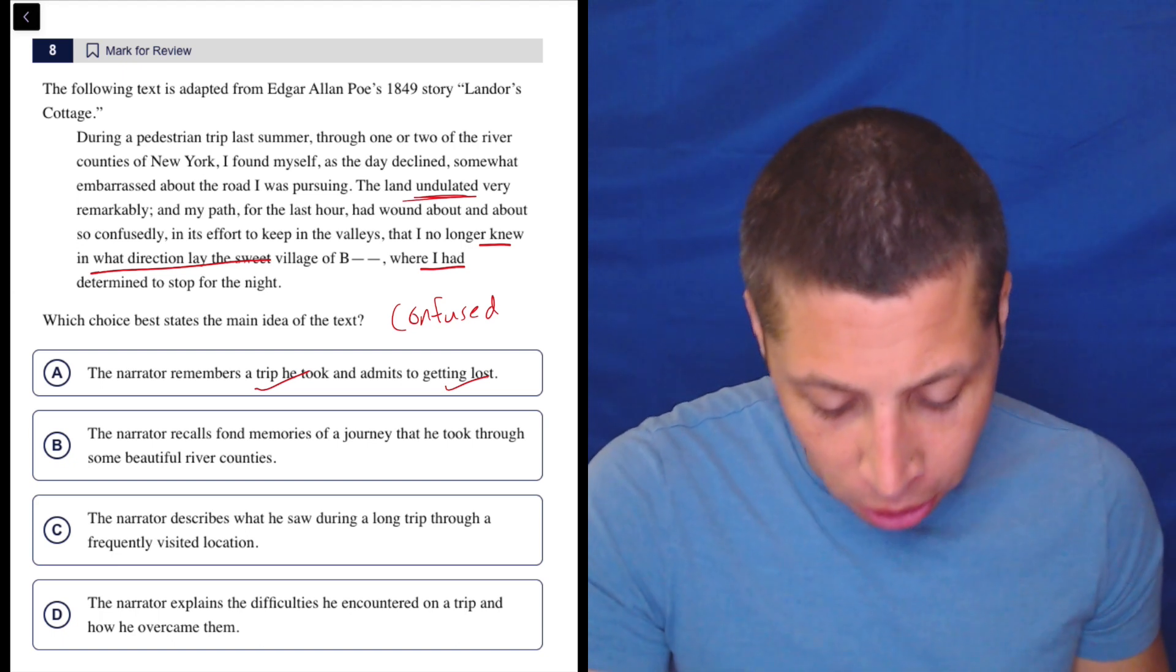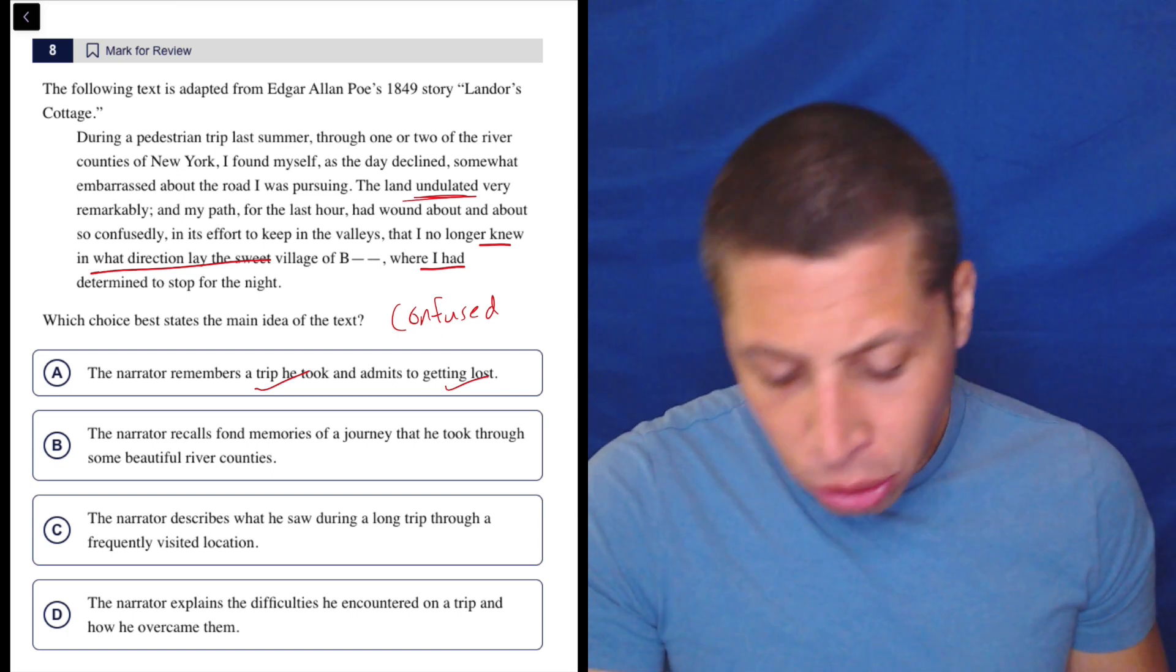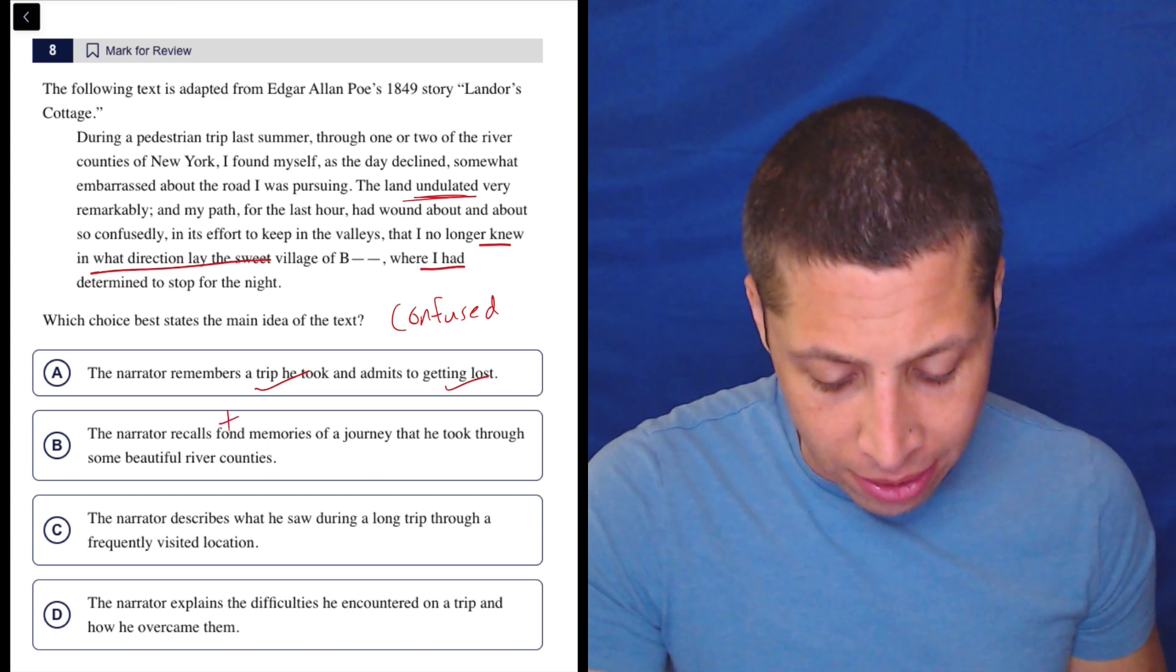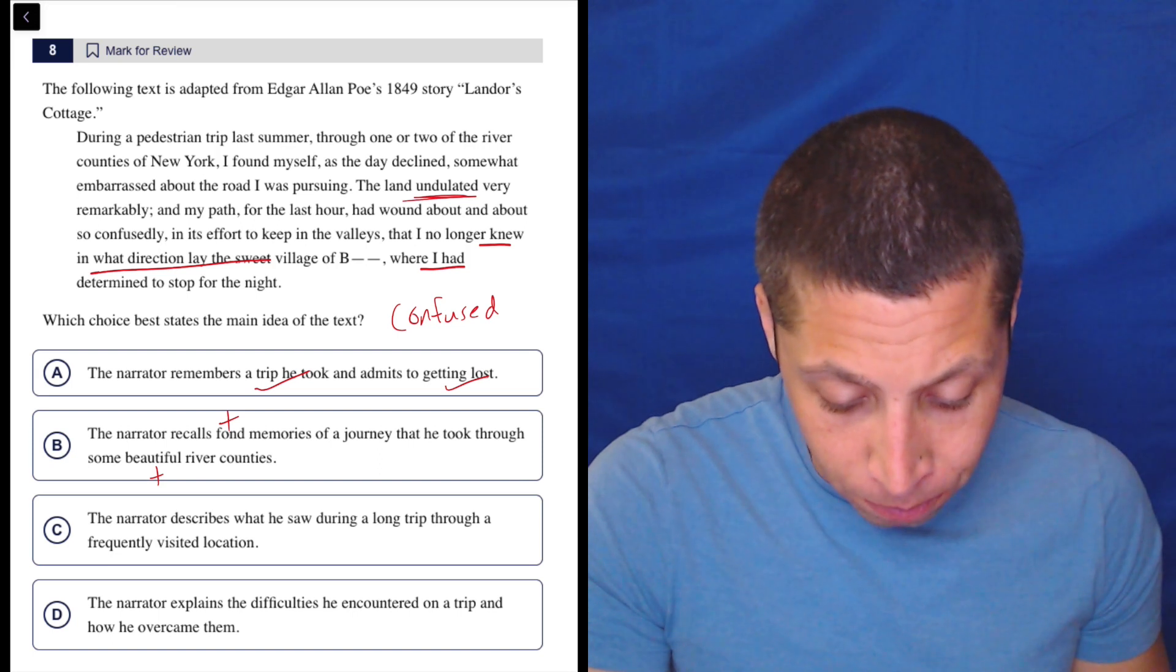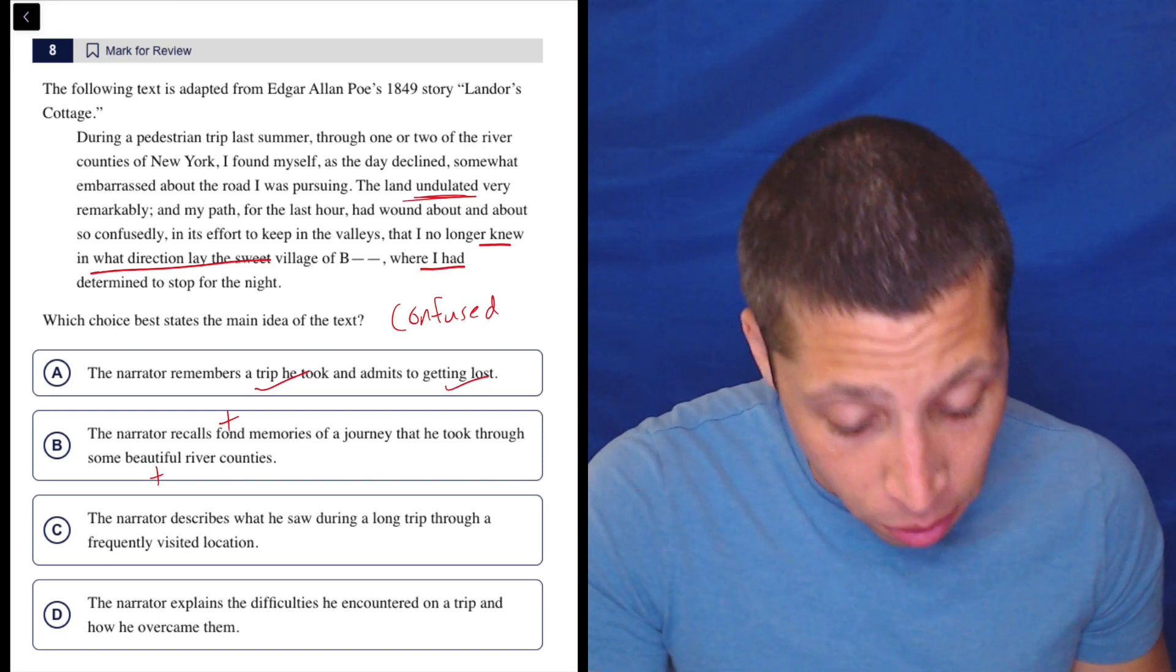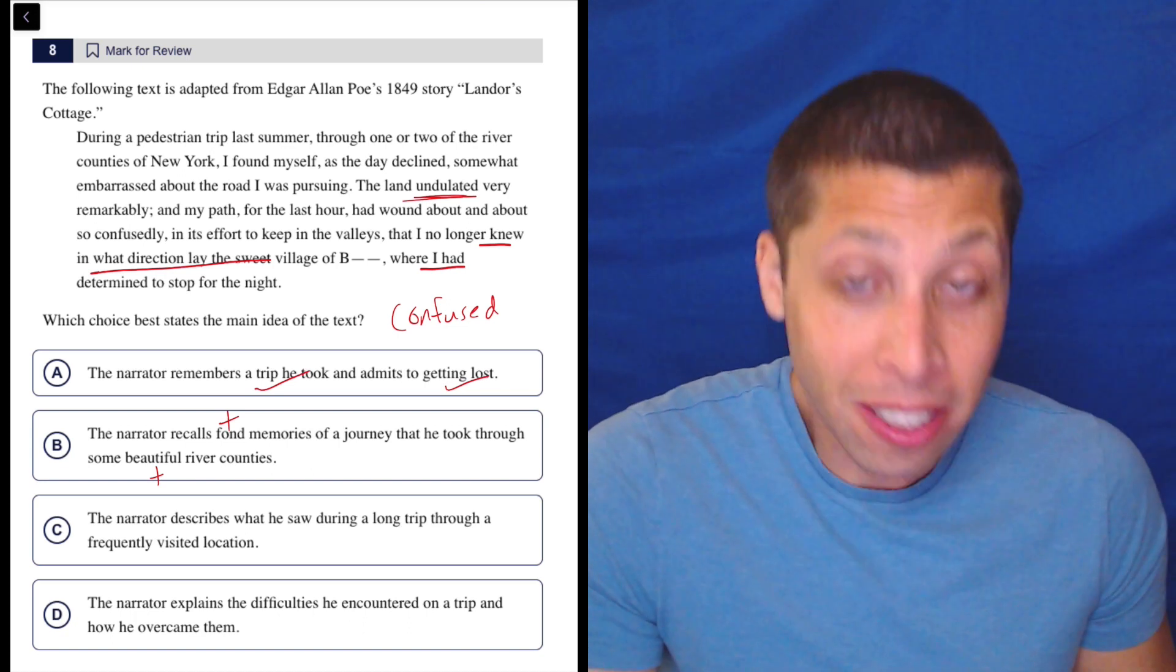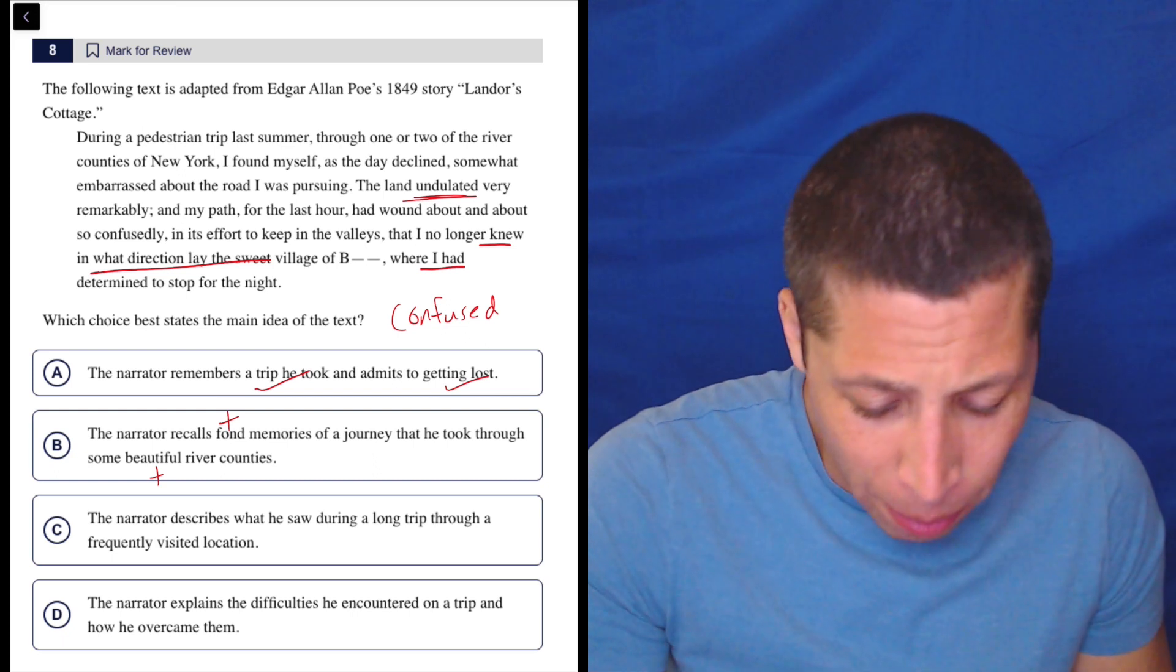B: The narrator recalls fond memories of a journey that he took through some beautiful river counties. Well, let's use the connotation here. Fond memories is very positive, beautiful river counties. Does it say they're even beautiful? He's in the river counties. I don't even think he says it's beautiful. So even that I don't have. But is this a fond memory?